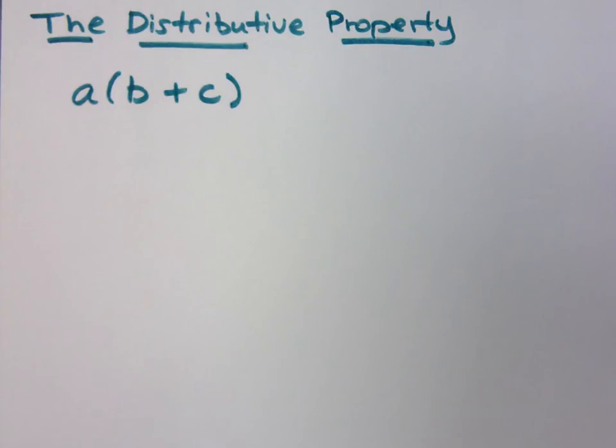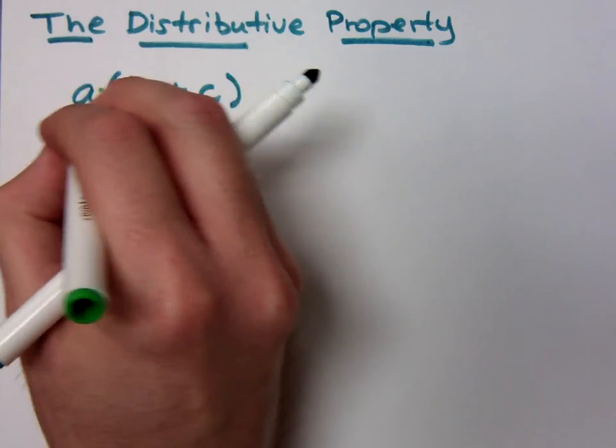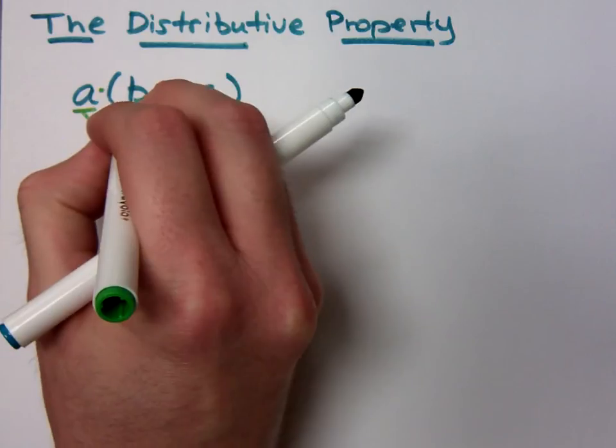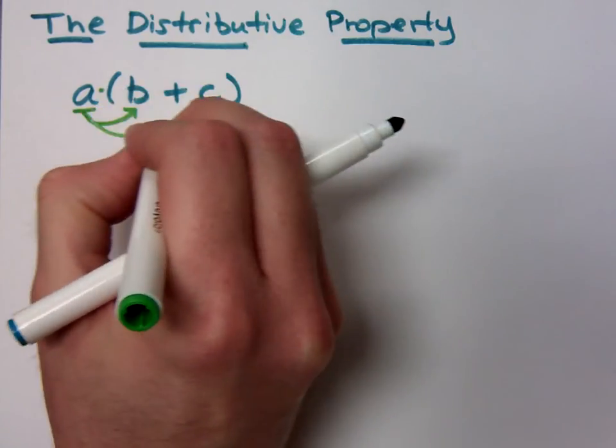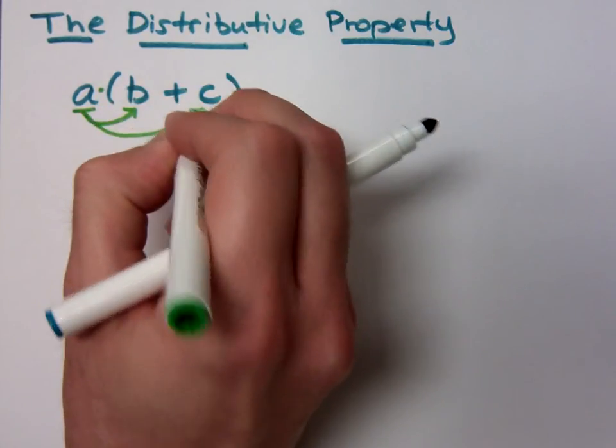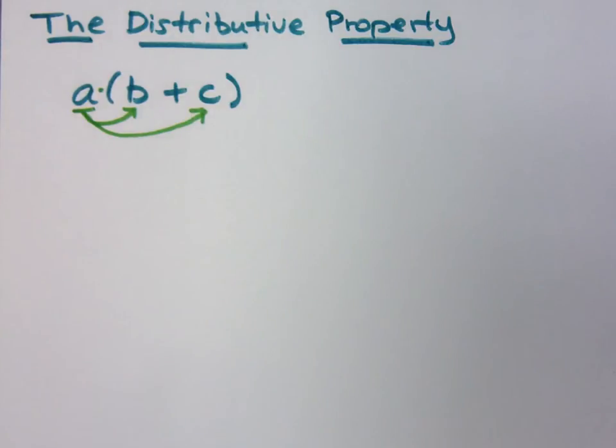The distributive property means I'm going to distribute this multiplication here of a, this term a, I distribute that to everything that's in the denominator. That means to every term in the denominator, or not, did I say denominator? I don't even know what I'm talking about. Just forget it. Start over.